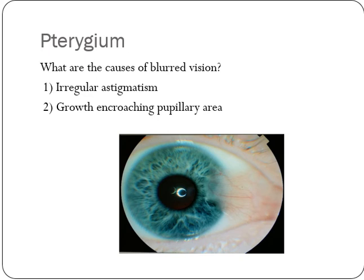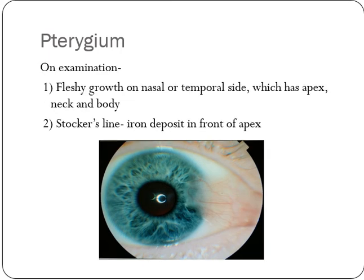The main reasons for blurring of vision are either irregular astigmatism, due to the change in curvature of the cornea caused by the fibrous tissue growing, or the growth coming into the visual axis. In severe cases, it can lead to complete loss of vision as well.